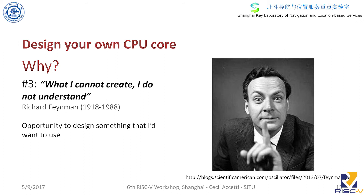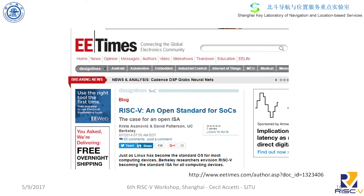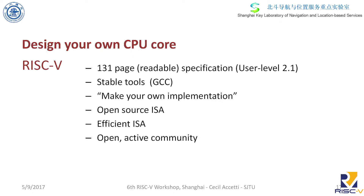So in August of 2014, we saw this article about RISC-V, and we decided to go with an open-source CPU. RISC-V gives us a 131-page specification, stable tools, we can make our own implementation, it's open source and efficient. At the beginning there was no community, but now we have an open, active community. So these are all points in favor of RISC-V, and we decided to go with RISC-V instead of designing our own open-source ISA.